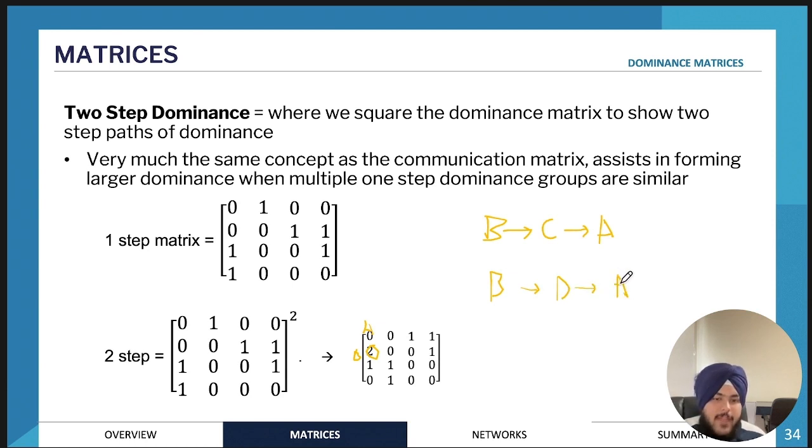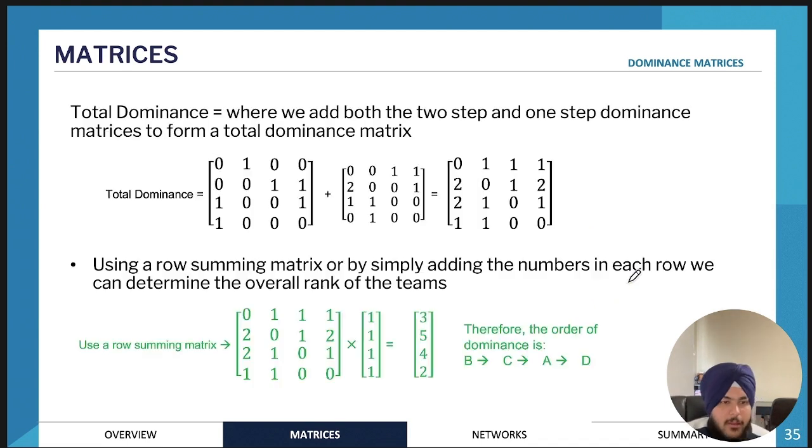Then we have total dominance. Once we find the total dominance matrix by adding the one-step dominance matrix and the two-step dominance matrices, we will get the total dominance matrix. We would use it to find the overall dominance.